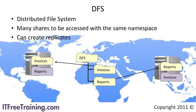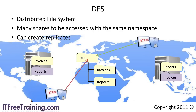Given this example, you could create replicates of the two shares on the other servers. When a user attempts to access DFS, the user will automatically be taken to the closest server with a copy of that share on it. This also allows you to create redundancy on your network. All the user sees is a single share which can connect them to an unlimited number of shares on the network completely transparently.